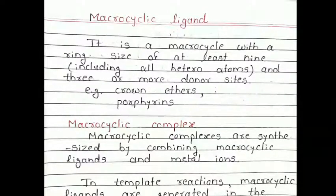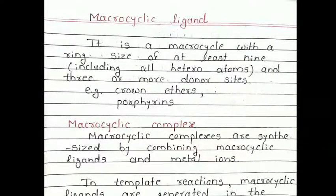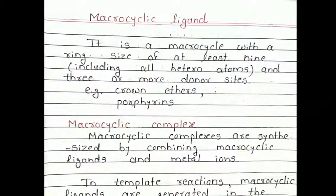We know what ligand means — these are the donors, which donate electrons to metals. Macrocyclic ligands include crown ether or porphyrin.